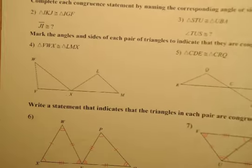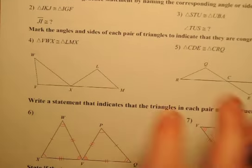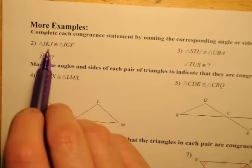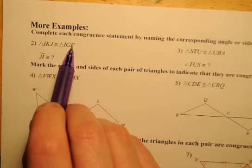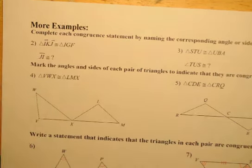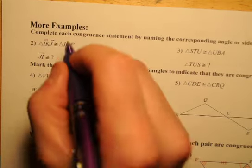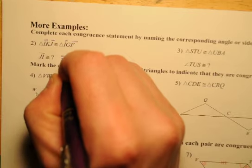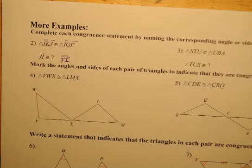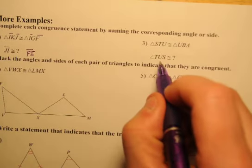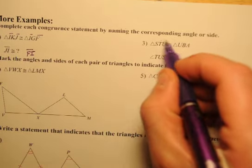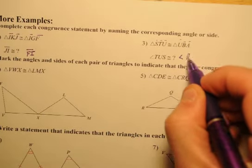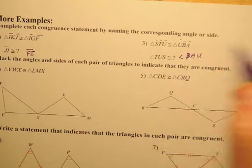On to the second page. These first examples are from the previous lesson. In this scenario, triangle IKJ is congruent to triangle IGF, so segment JI matches up with segment FI. For number three, angle TUS would match up with angle BAU — go in the same order: T, U, S matches with B, A, U.